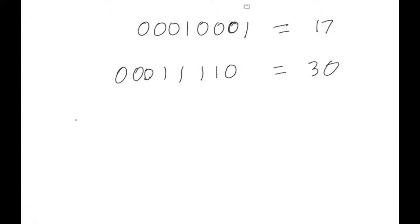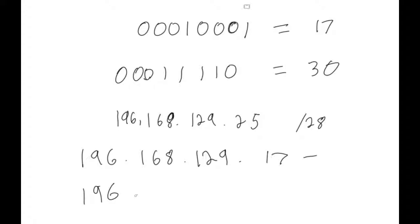So, that answers the question. What valid host range is the IP address 196.168.129.25 a part of? And that answer is, you go from 196.168.129.17 through 196.168.129.30.